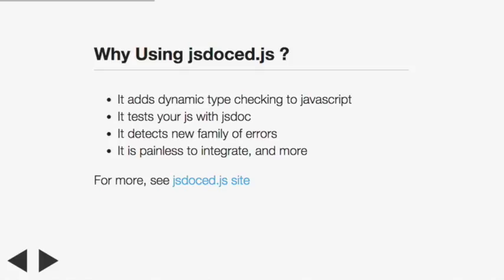If you wanted static type checking you could do Dart, but you'd have to rewrite all your application. Another advantage is it's painless to integrate because this is JavaScript-to-JavaScript. If you include it today, you can remove it tomorrow - at the end you just have more JSDoc documentation. It's very easy to integrate and remove.